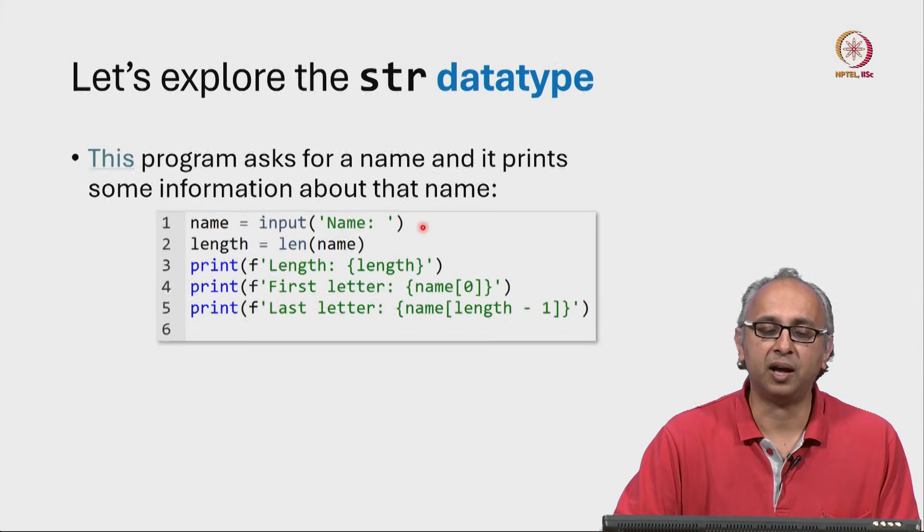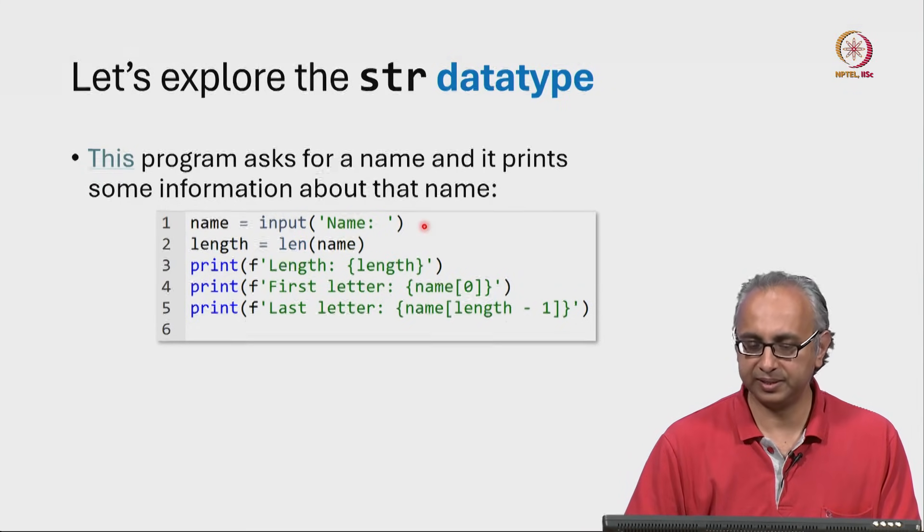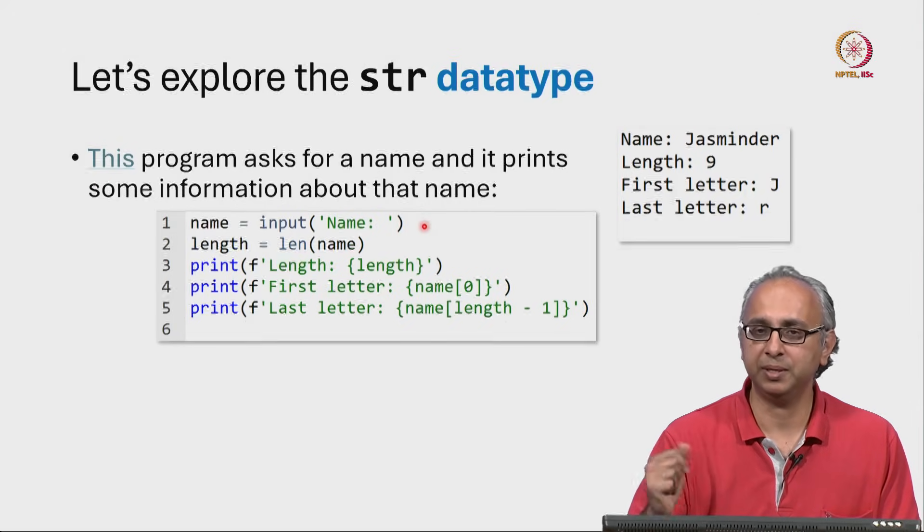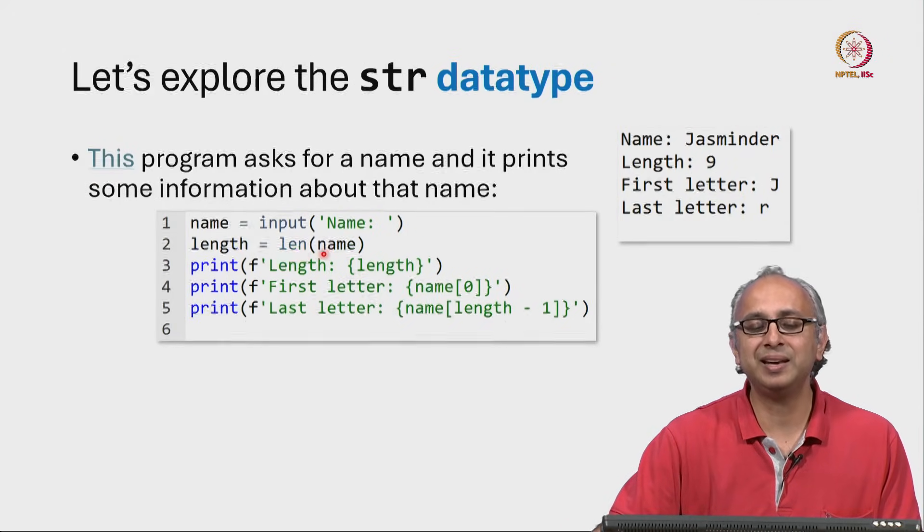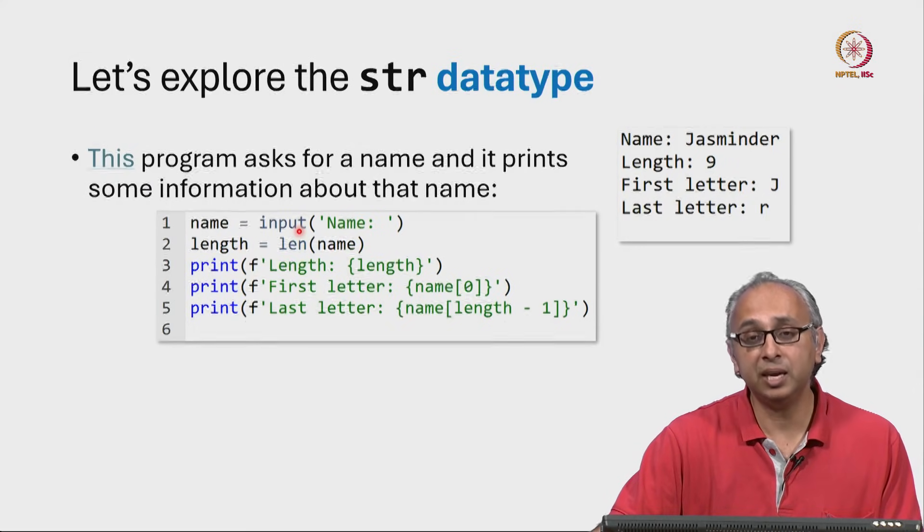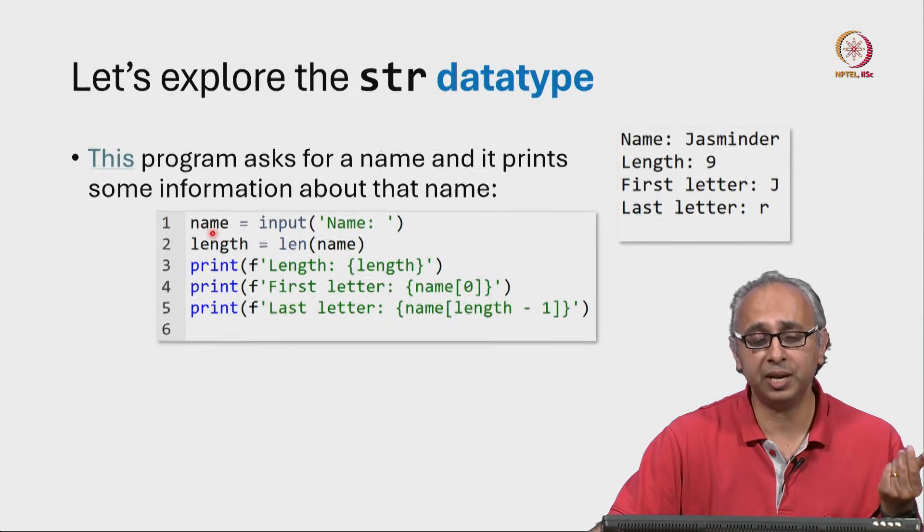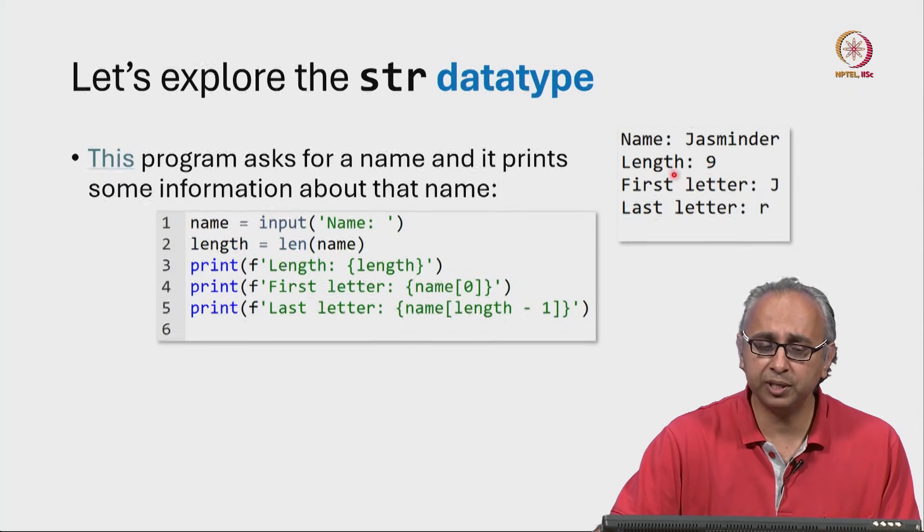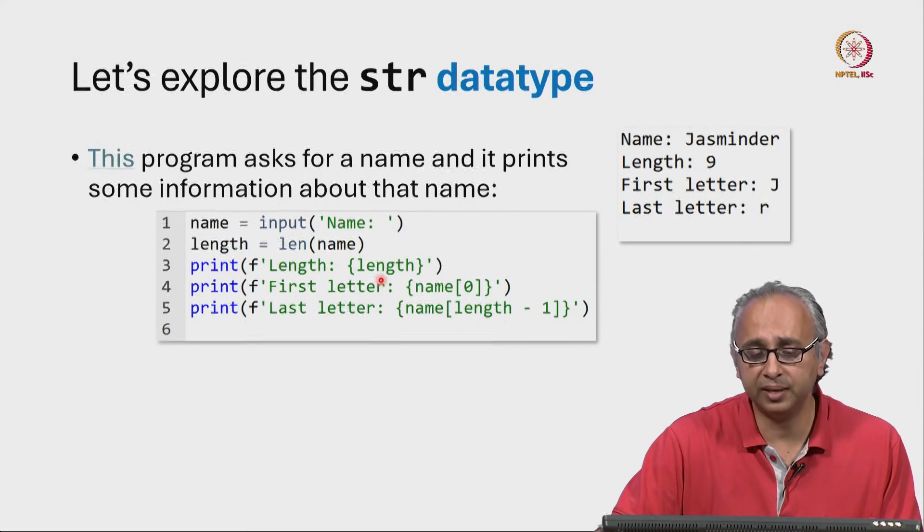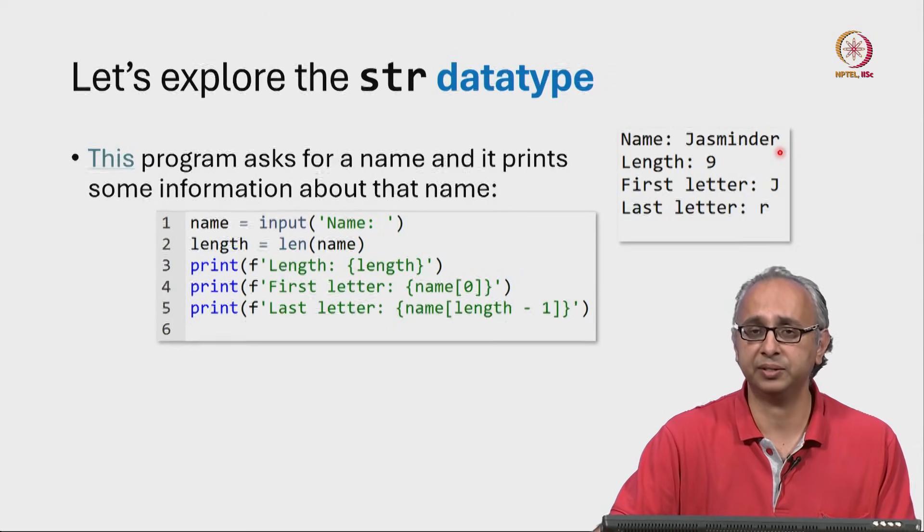So here, of course, we first ask for a name and let's say I type in the name Jasminder. Then I come to the next line and calculate the length of that name. Remember the input function returns a string, so name is attached to a string object. The length of that name turns out to be 9. How did we print this? Well, on line 3, we have a print statement that prints the length, and you can confirm by counting that Jasminder has 9 letters in it.